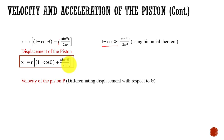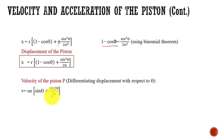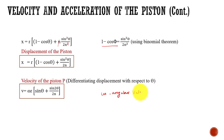Now we need the velocity of the piston. Since velocity is the derivative of displacement with respect to time, by differentiating the displacement with respect to θ, we get the velocity of the piston: v = ωR(sin θ + sin 2θ / 2N), where ω is the angular velocity of the crank.